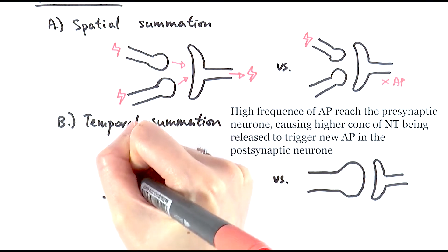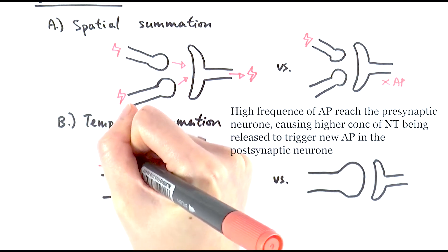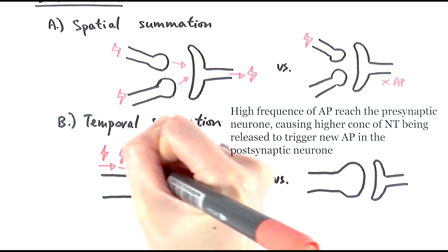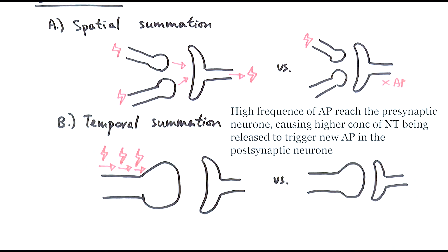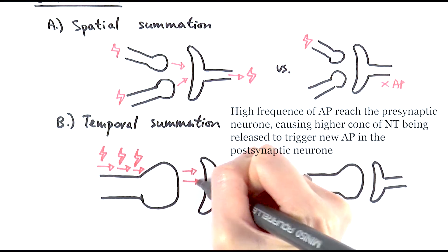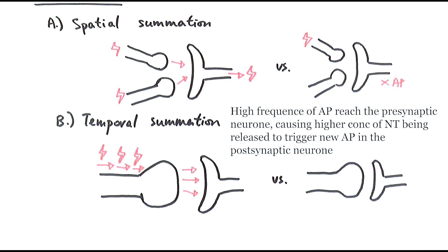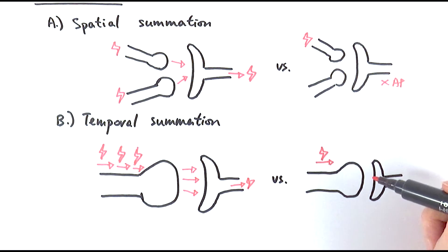In this case, there are multiple high-frequency action potentials being received at the presynaptic neuron. Therefore, because there's loads of them, a lot more neurotransmitters can actually be released from that action potential.